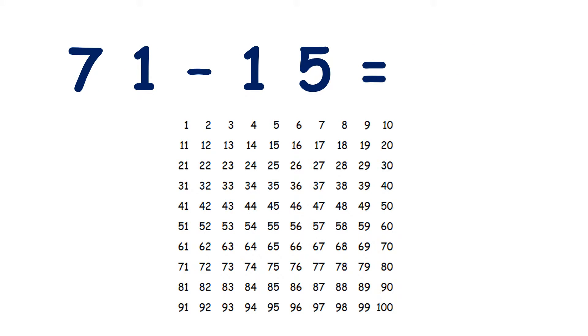Now we have 71 take away 15. So we find 71, and now what are we going to do? We need to subtract one ten and five units. So let's start with our one ten. We can move one place up to subtract ten.